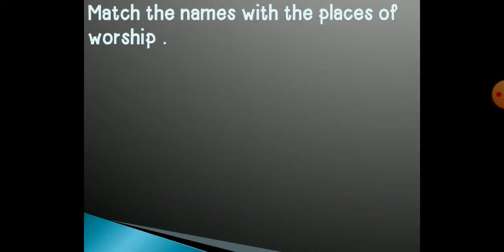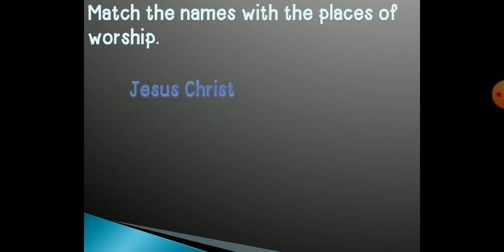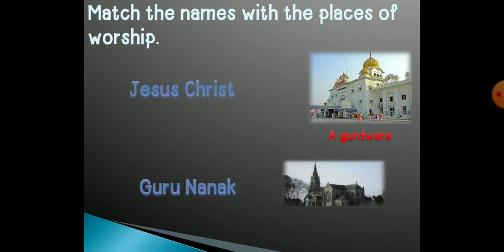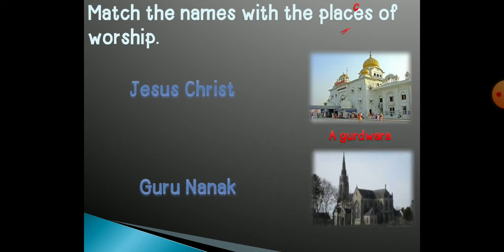Match the names with the place of worship. We have Jesus Christ and Guru Nanak. This is a picture of Gurdwara, and this is a picture of a Church. So, what is related to Jesus Christ? Church — match it.